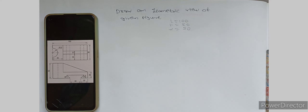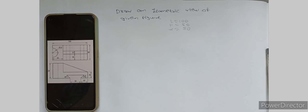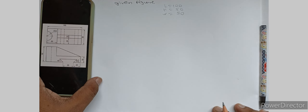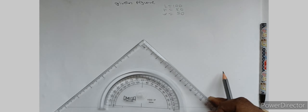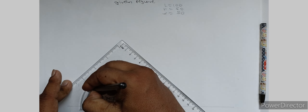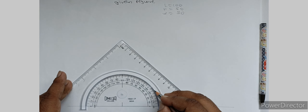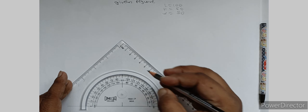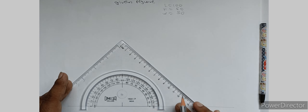First of all, you have to make a cube on the basis of length, height, and width. You have to make an angle — both sides you have to take a 30-degree angle, because an isometric view is drawn at 30-degree angles: 30, 90, and 30. Length you have to draw is 100 mm, width is 50 mm.